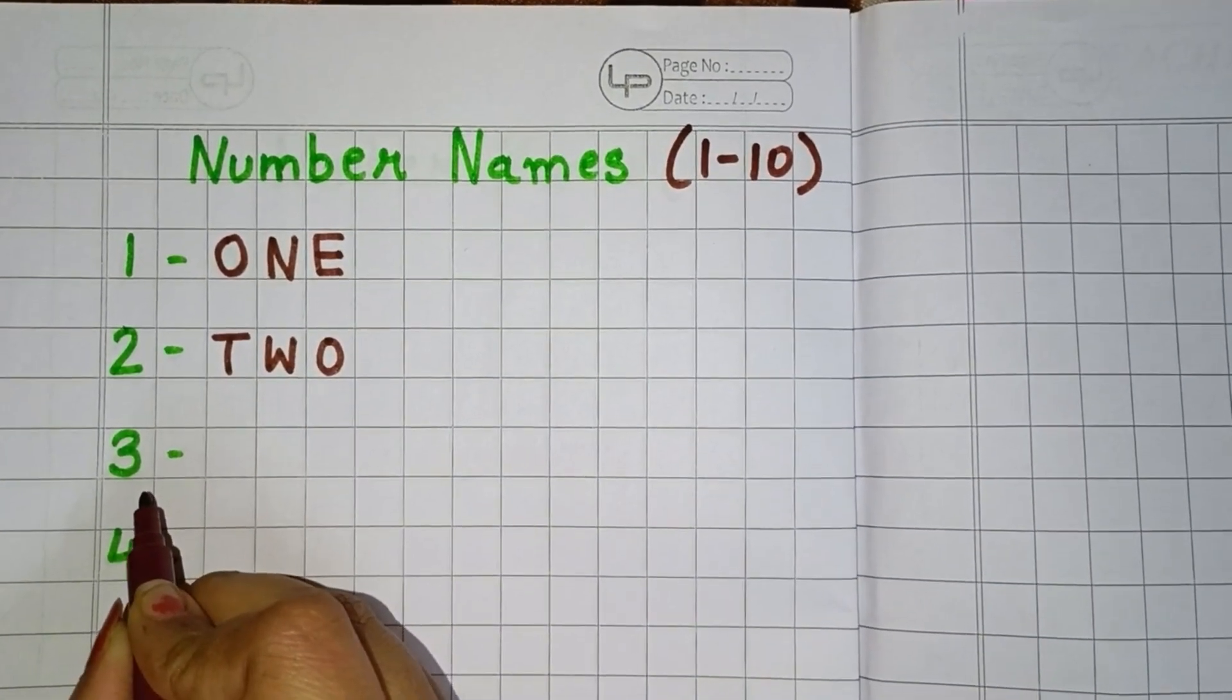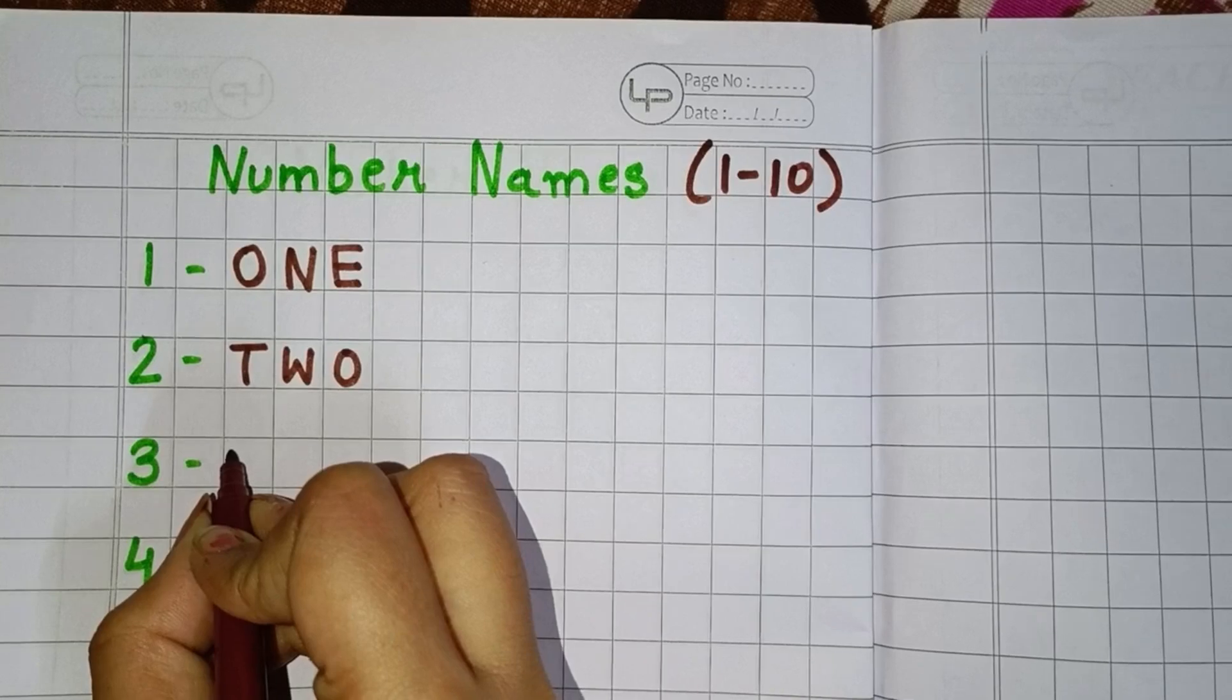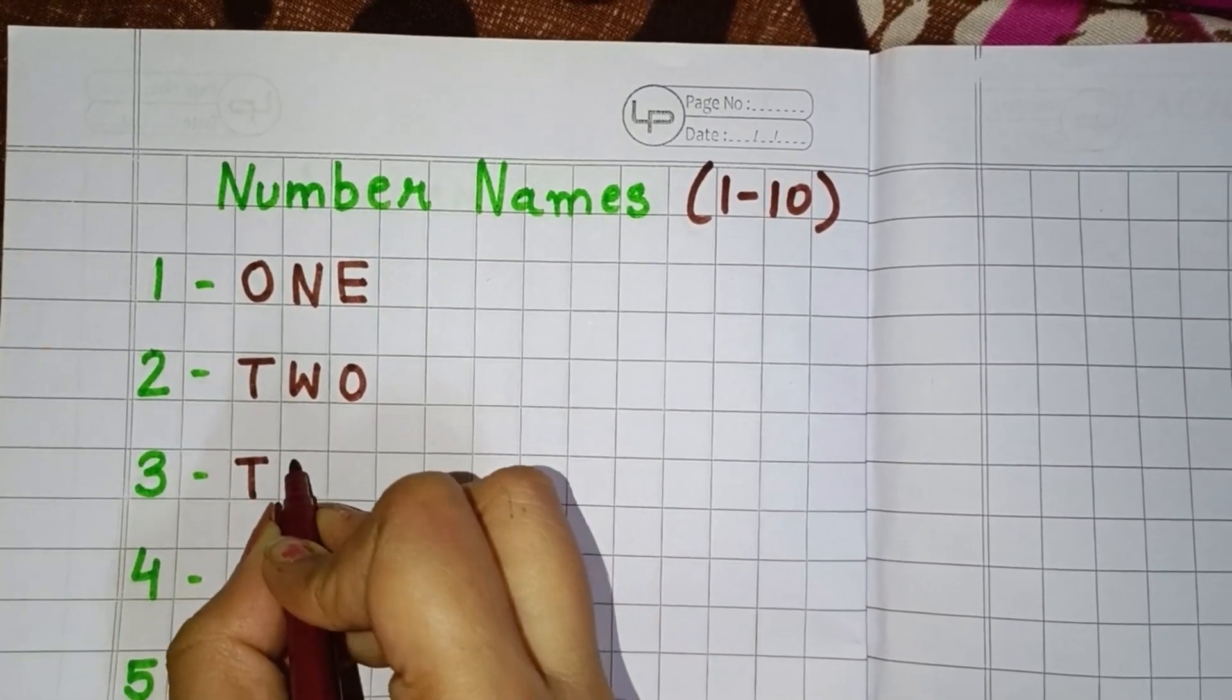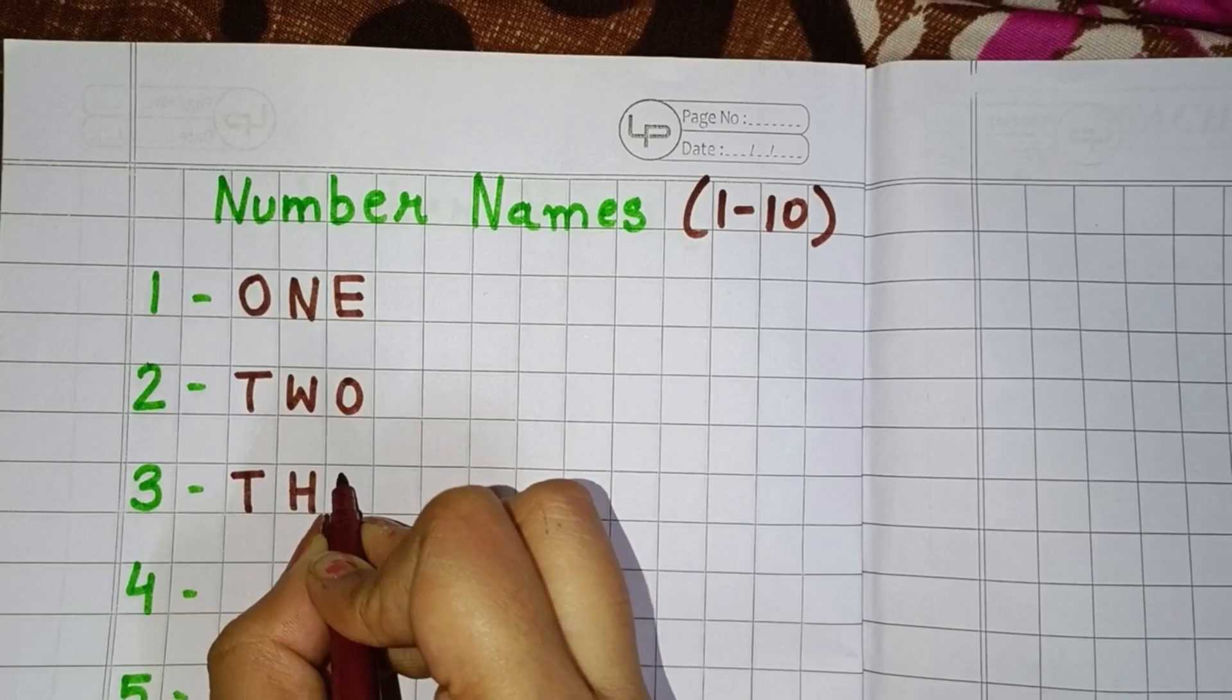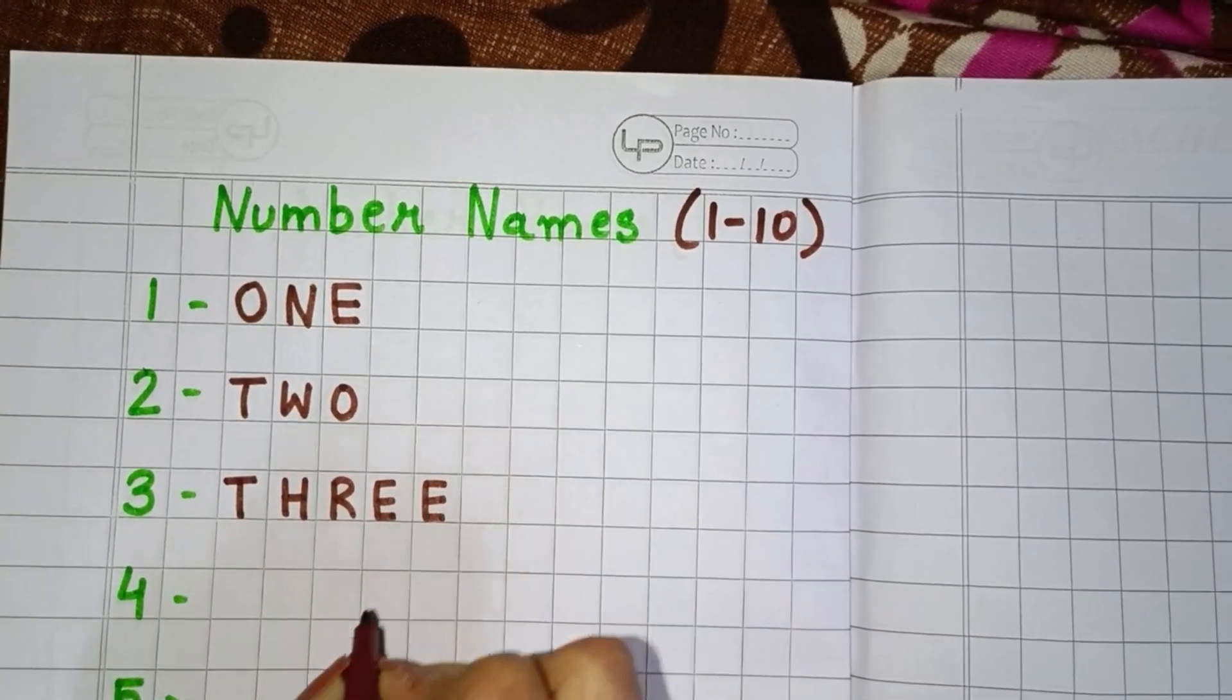Now the next number is 3. So you will write 3 in words. So you have to write first T, H, R, E, E. Three.